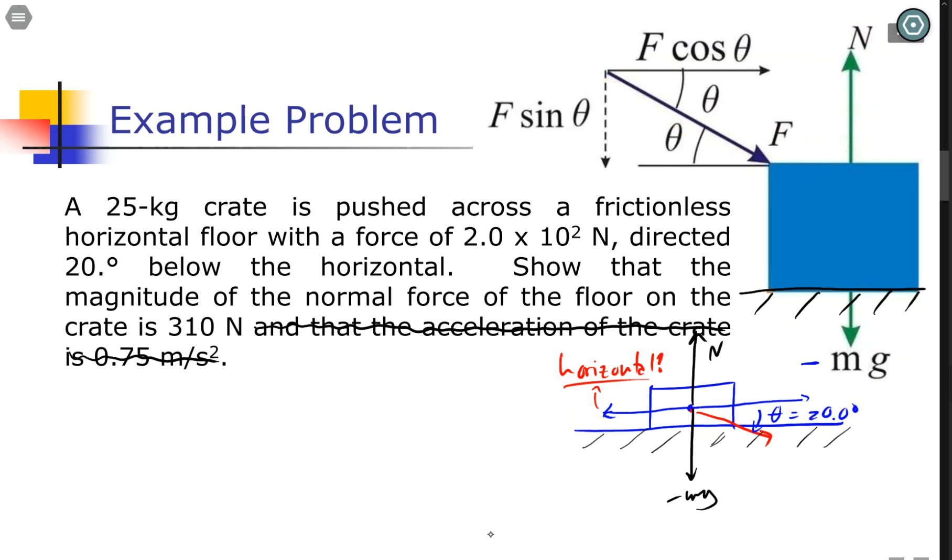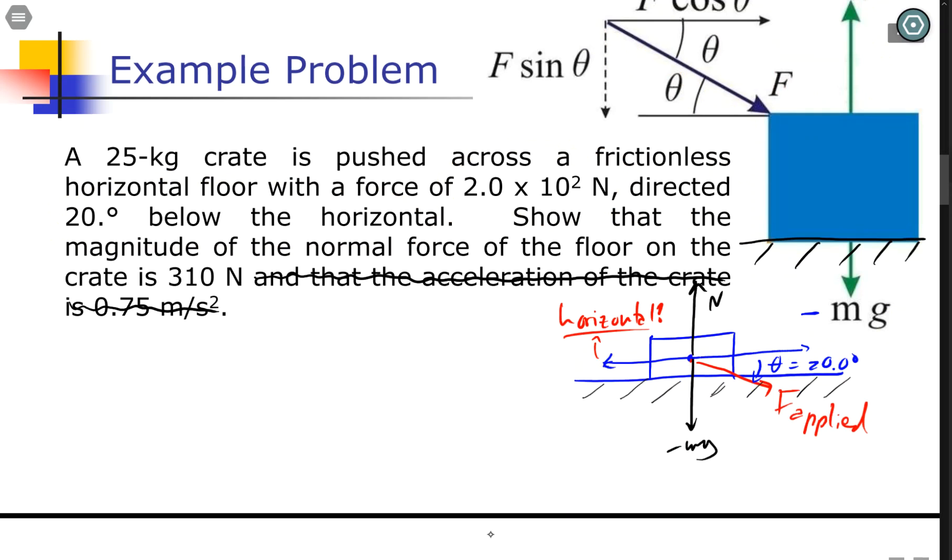When we say a force of 200 N is directed below the horizontal, well, this is your horizontal right here. And if it's below the horizontal, this is our applied force. So just below the horizontal like that. So this force right here is going to have an fx component and it's going to have an fy, and it's actually negative fy because it's in quadrant 4.